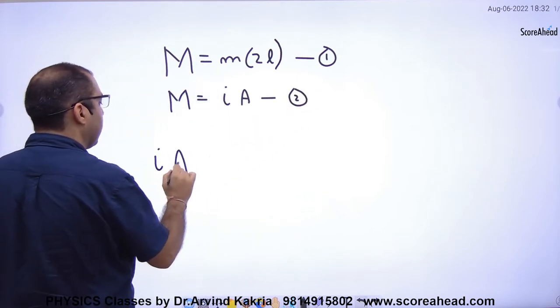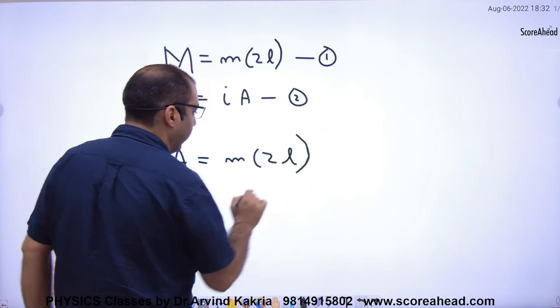Now let's equate both. Current into area is equal to small M into 2L. Right?